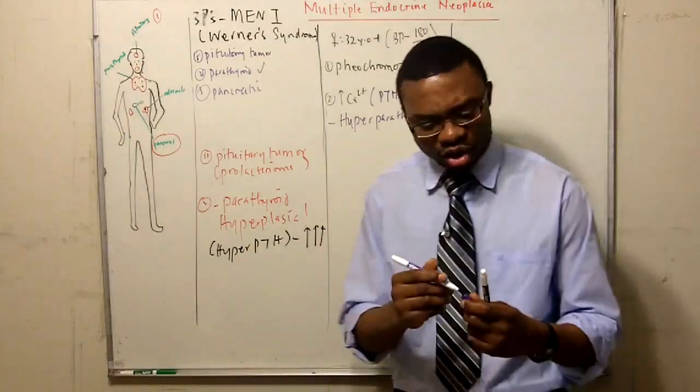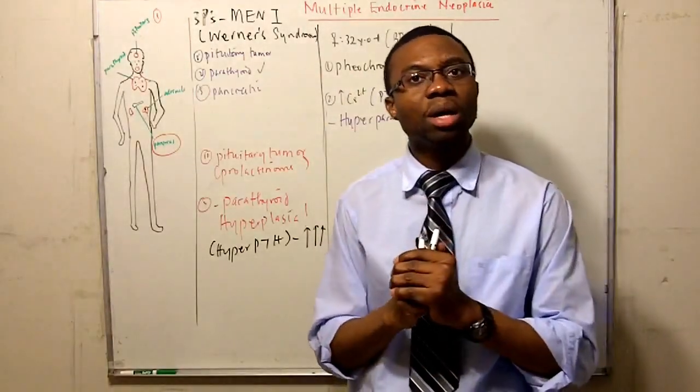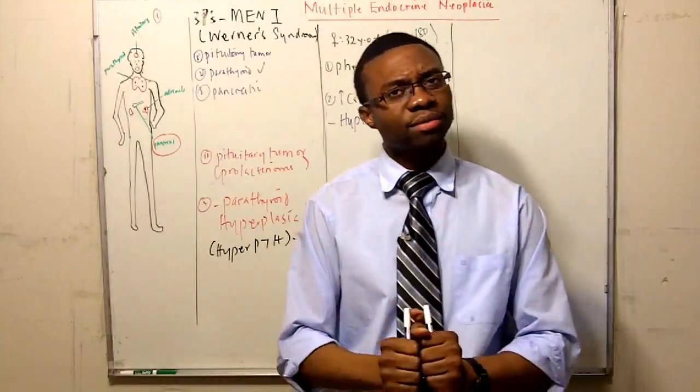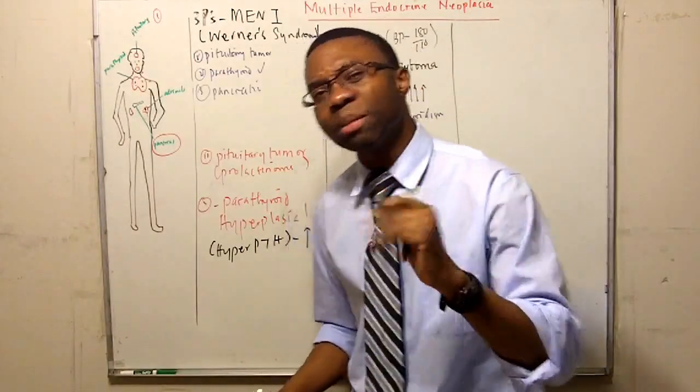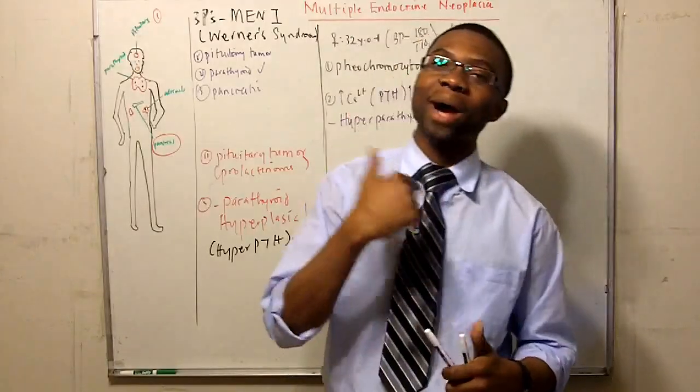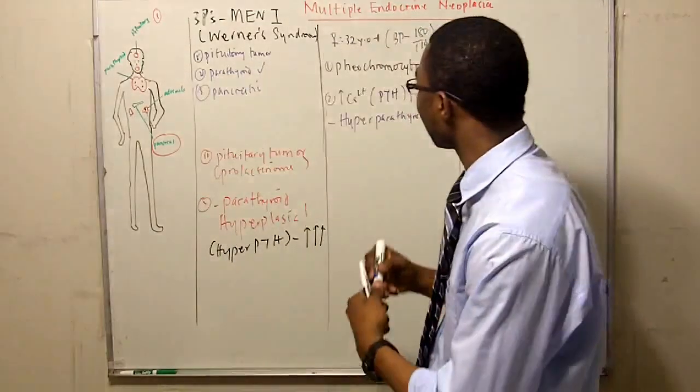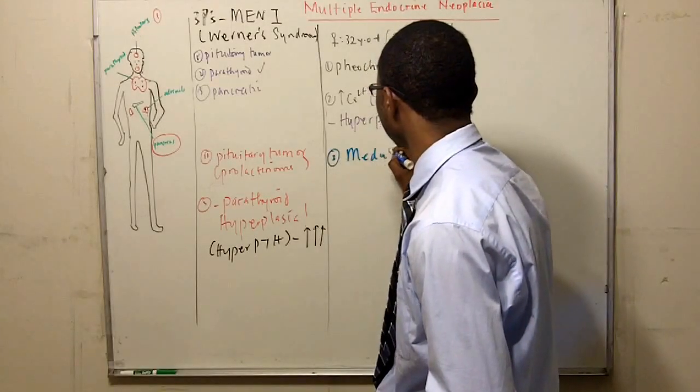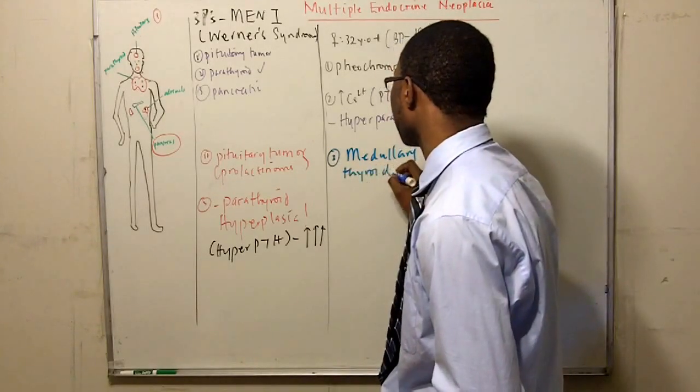We were like, 'Wait a minute. You had hyperparathyroidism and you had a pheochromocytoma? I'm a little bit worried for you. I'm very worried because there might be another thing going on that if we don't pick it up, it might kill you.' So we decided to check the thyroid and we did a biopsy. And guess what else she had? She had an underlying medullary thyroid carcinoma.